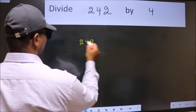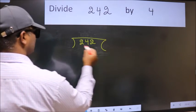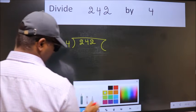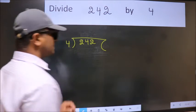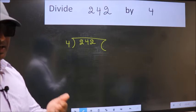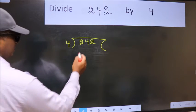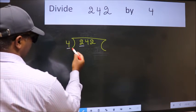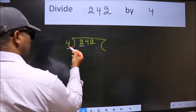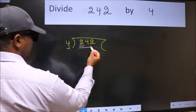242 here, 4 here. This is your step 1. Next, here we have 2 and here 4. 2 is smaller than 4, so take two numbers: 24.